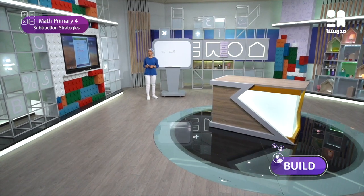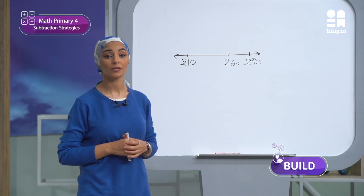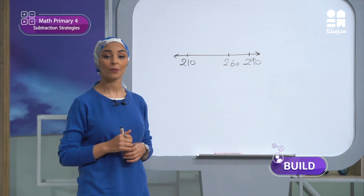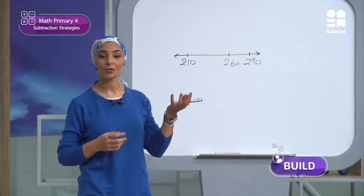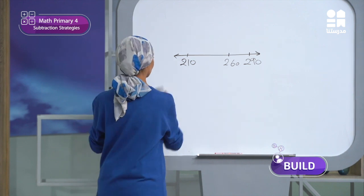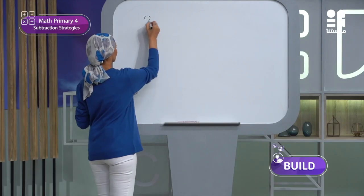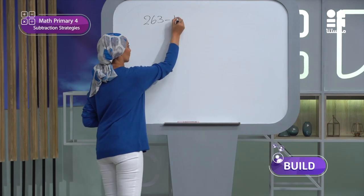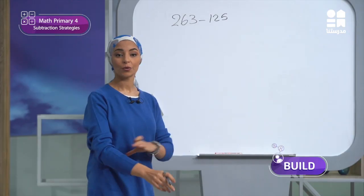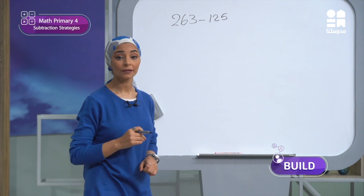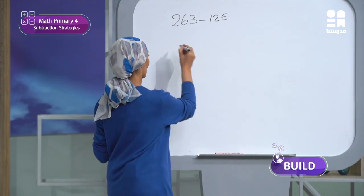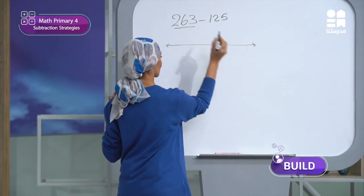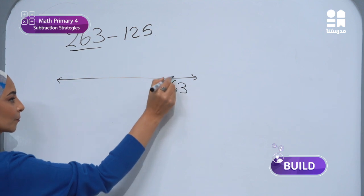Now let's look at subtraction strategies, starting with counting back with decomposition. For example, we need to subtract 263 minus 125. The first thing is to write the larger number, which is 263. I put it here on the number line.